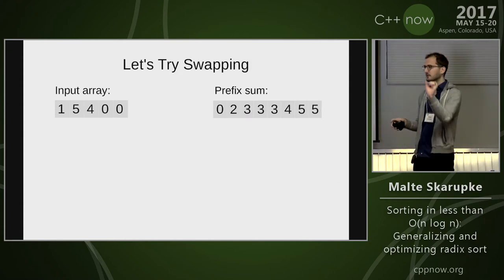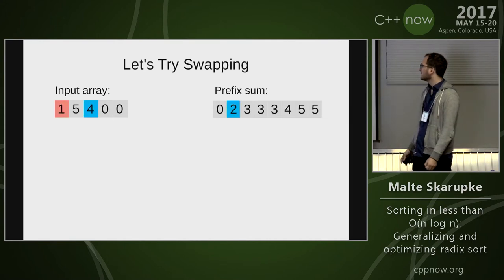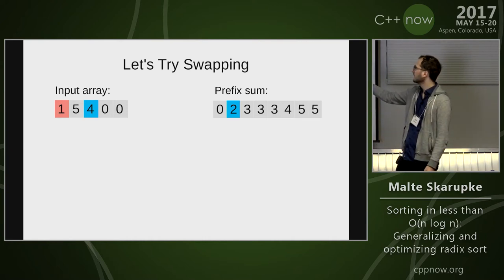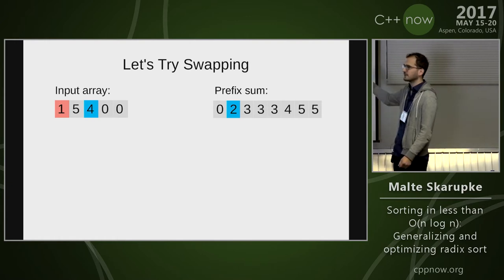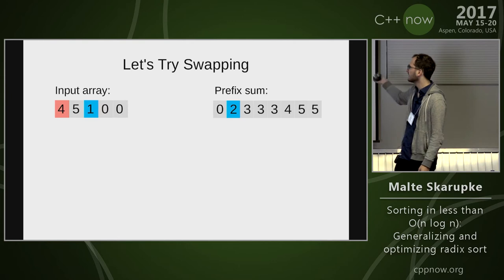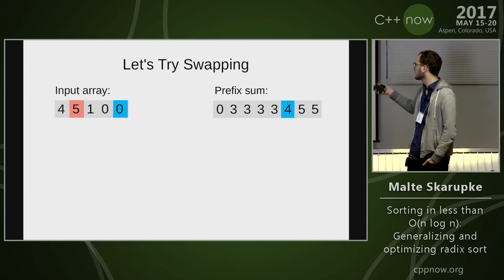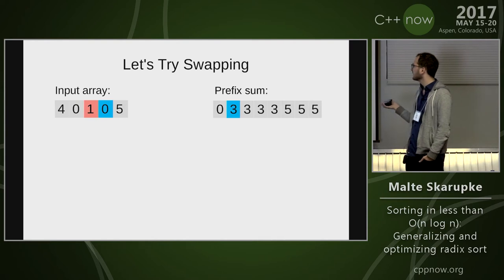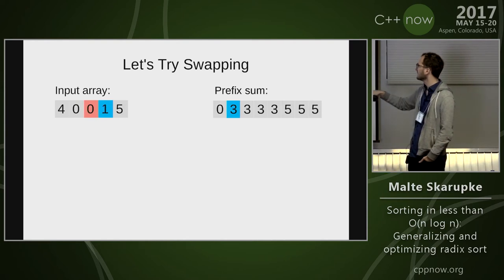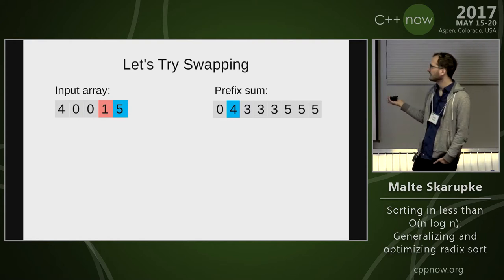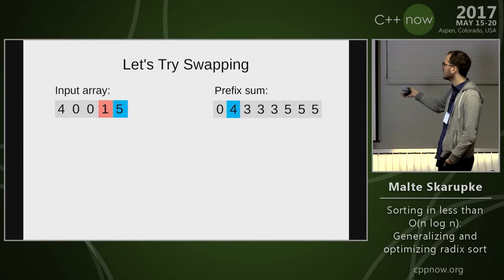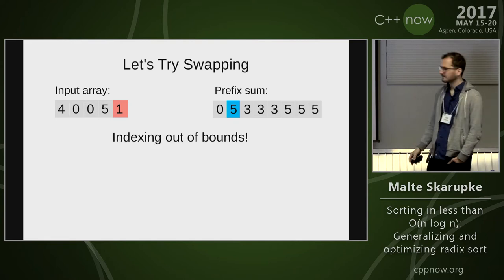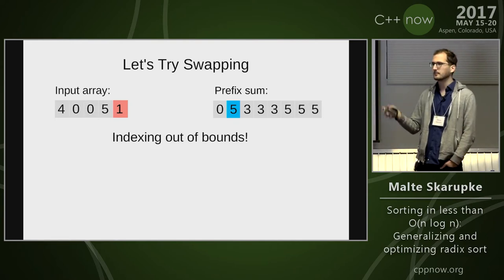What if we just swap everything into place instead of copying to a different array? Walking through: swap the 1 to index 2 and increment the prefix sum count. Find the 5, swap to index 4, increment. Find a 4, swap to index 3. Then we find 0 at index 0, but then the number 1 keeps wanting to go to incrementing indices until we're indexing out of bounds. Clearly we can't just replace copying with a swap—that doesn't work.